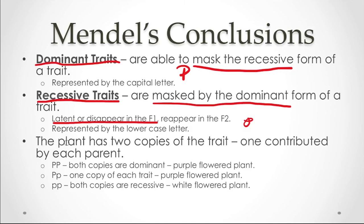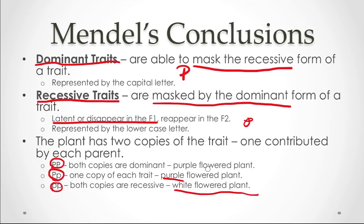Mendel also determined that each plant must have two copies of each trait, one received from each parent. This means there are three possibilities for flower color: a plant can have two dominant copies (PP) and be purple; one dominant and one recessive copy (Pp) and still be purple, because the dominant allele masks the recessive; or two recessive copies (pp), which is the only way to produce a white-flowered plant. The next video will cover Punnett squares, genotype, and phenotype.